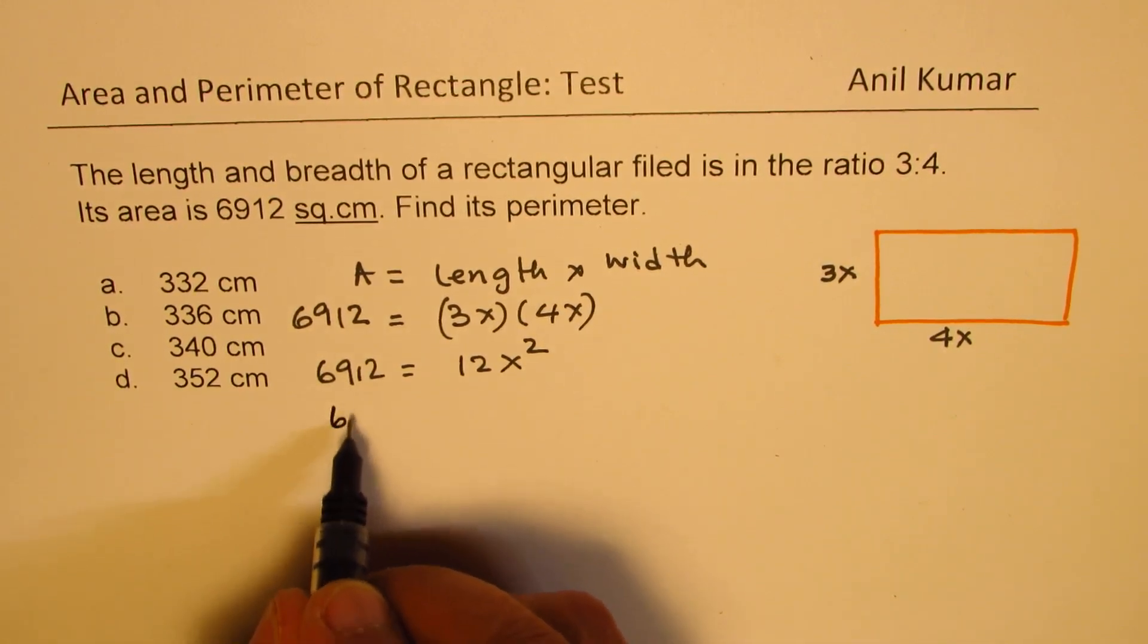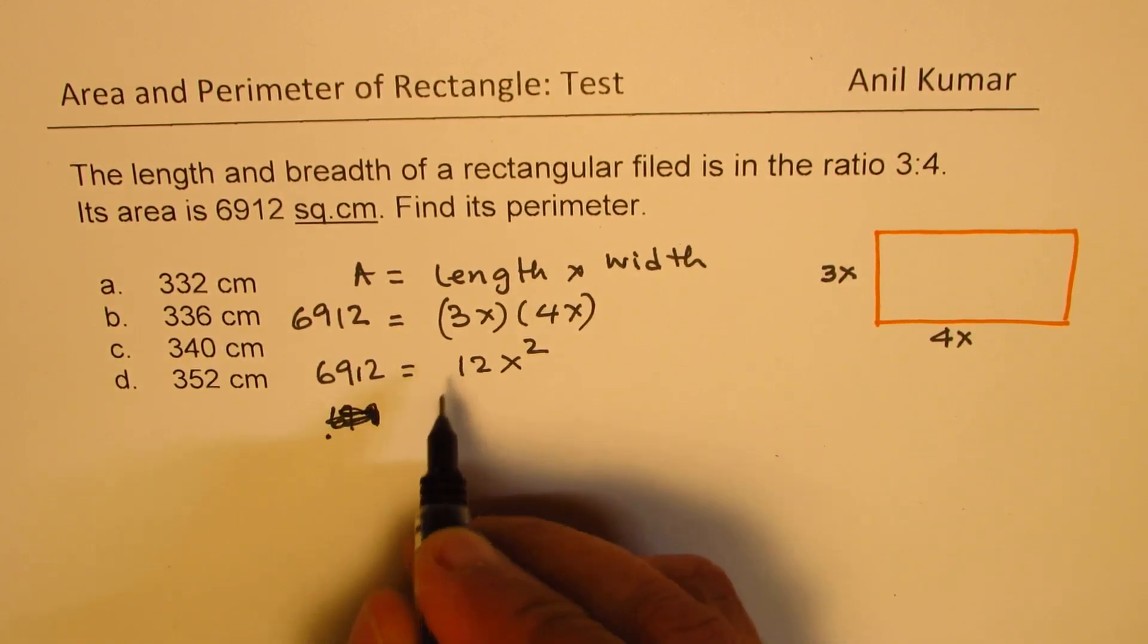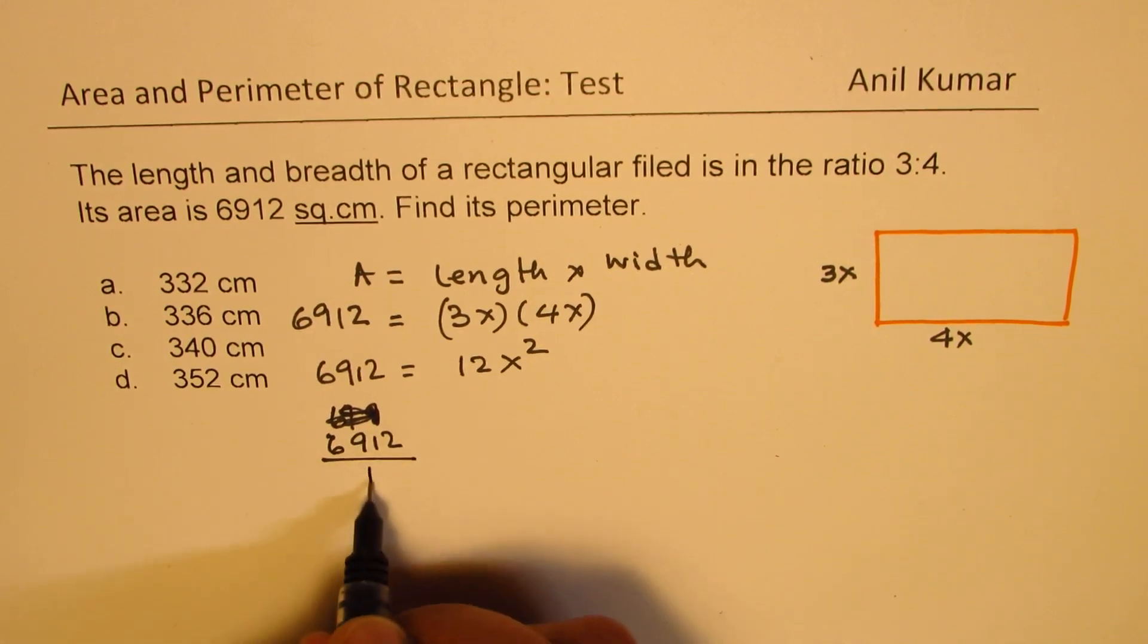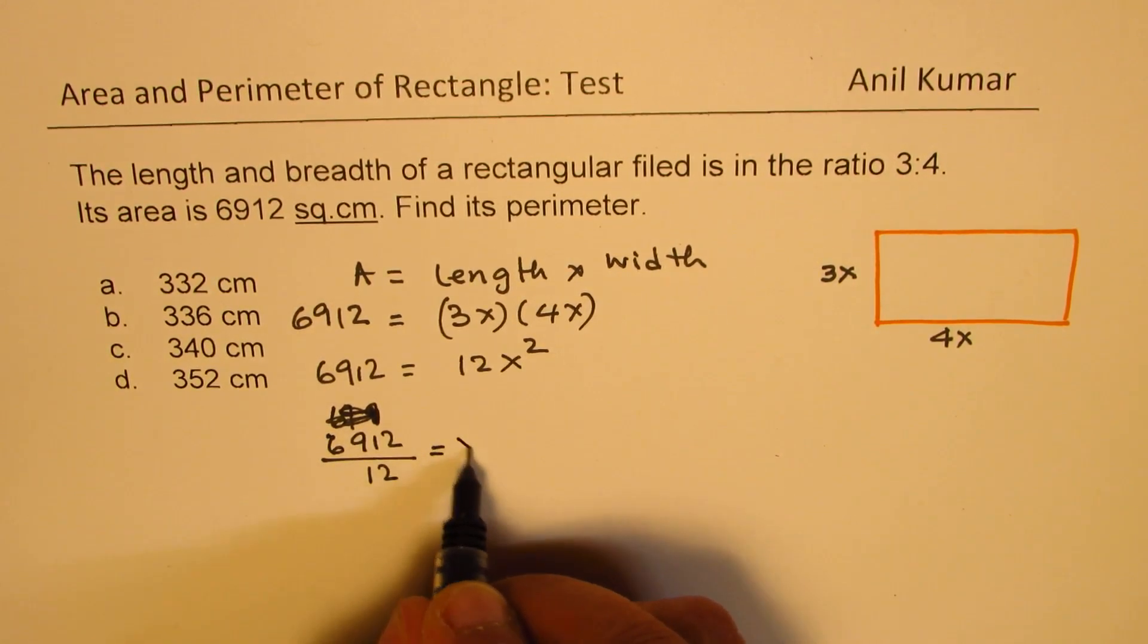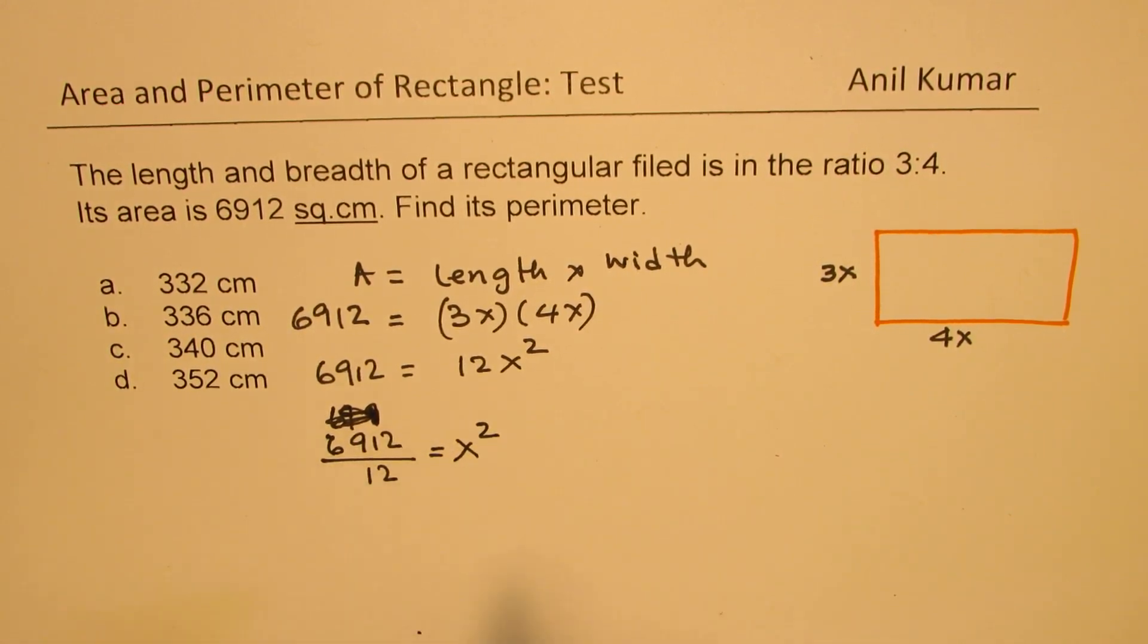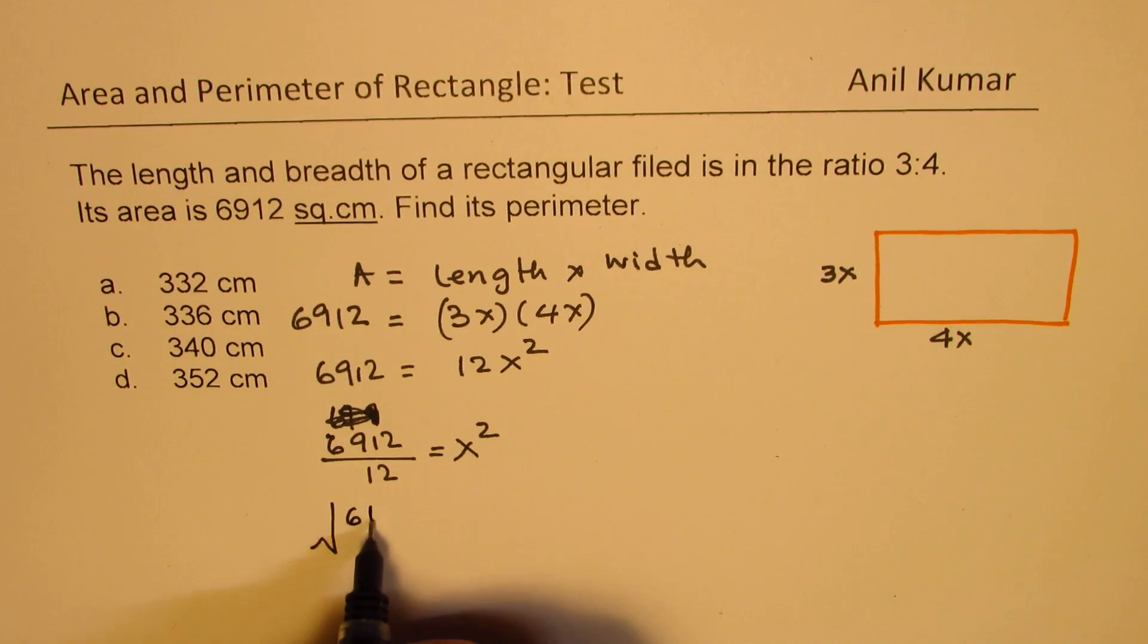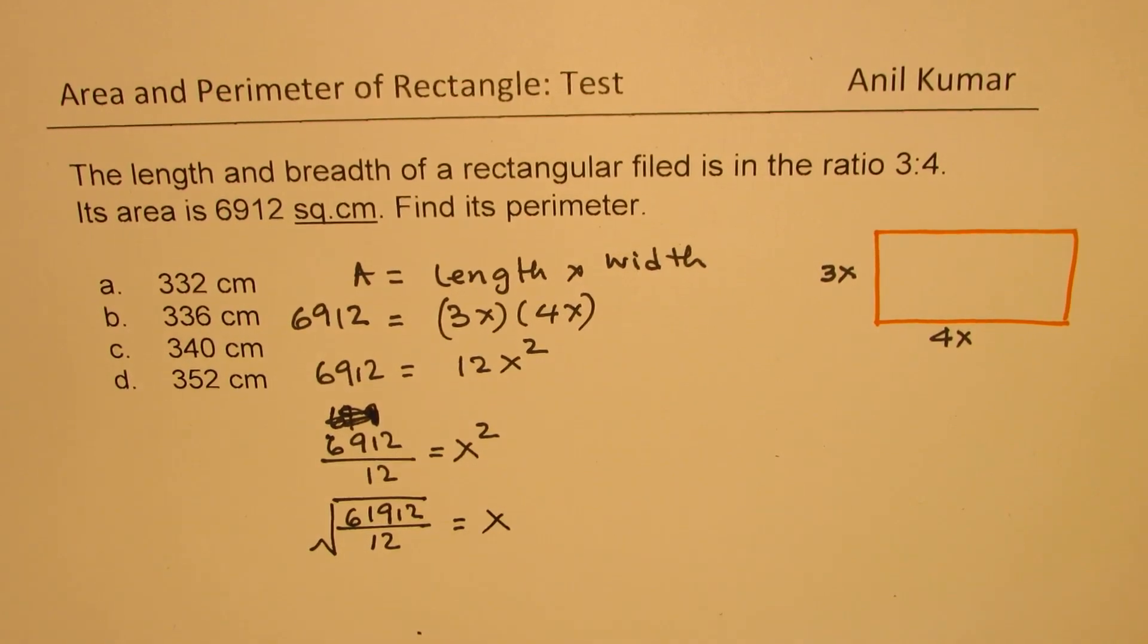So 6912, we can write this as 6912 divided by 12 equals to x square, or we'll do the square root of this, which is square root of 6912 divided by 12. That is x.